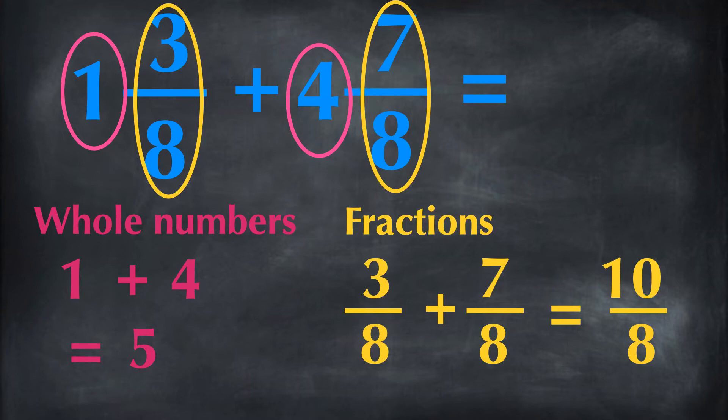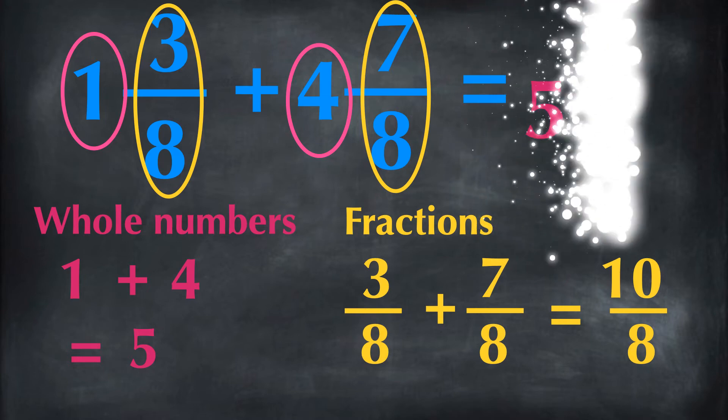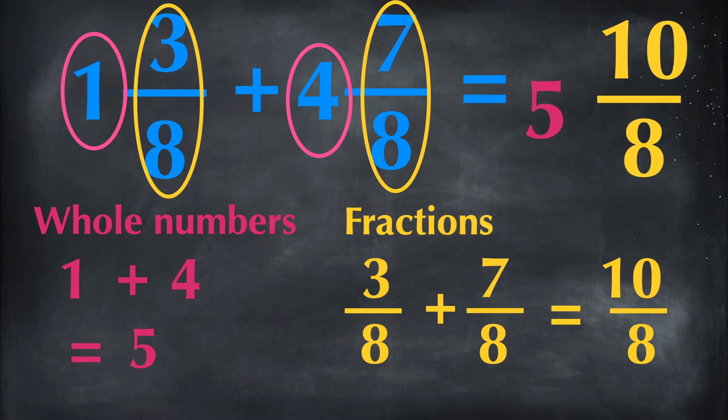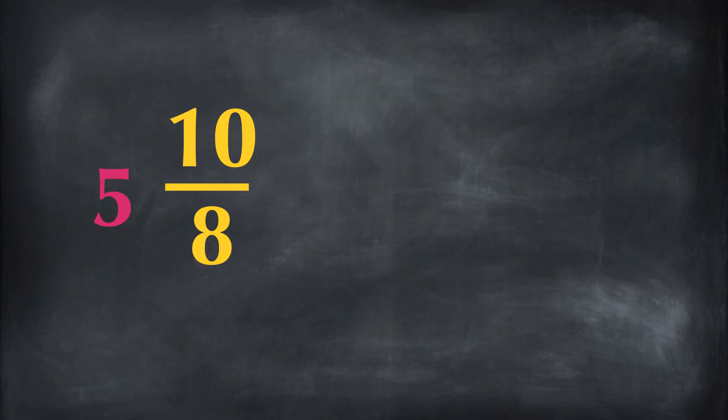And we have 3 eighths and 7 eighths in the fractions. 3 eighths plus 7 eighths is 10 eighths. And the final answer is 5 and 10 eighths.